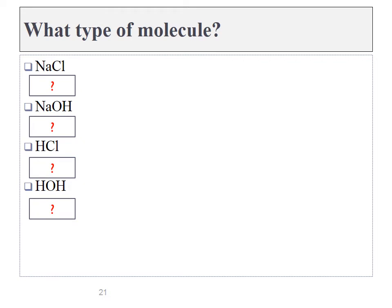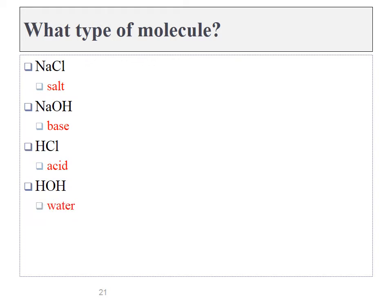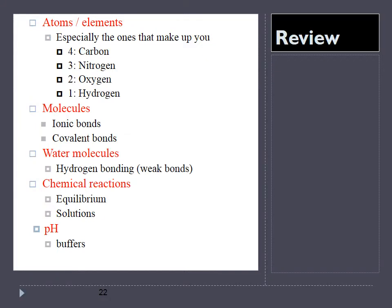So let's review. Sodium chloride is what type of molecule? Hopefully you said as a salt, whereas sodium hydroxide is a base. Hydrochloric acid is, of course, an acid, and that last one is just another way of writing water. So those are some of the basic atoms that we will be discussing, as well as water molecules and pH.